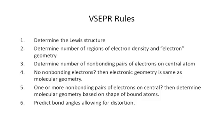The rules are: first, determine the Lewis structure. Once you've determined the Lewis structure for your molecule, determine the number of regions of high electron density around that central atom, and then you can determine the electron geometry. After that, determine the number of non-bonding pairs of electrons on the central atom. If there are no non-bonding pairs of electrons, then the electronic geometry is the same as the molecular geometry. If you have one or more non-bonding pairs of electrons on the central atom, then you determine the molecular geometry based on the shape of the bound atoms. Finally, you predict the bond angles allowing for bond distortion.